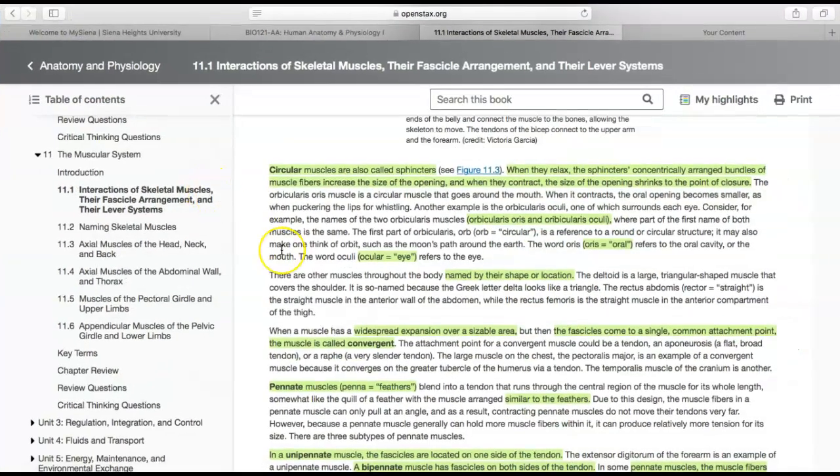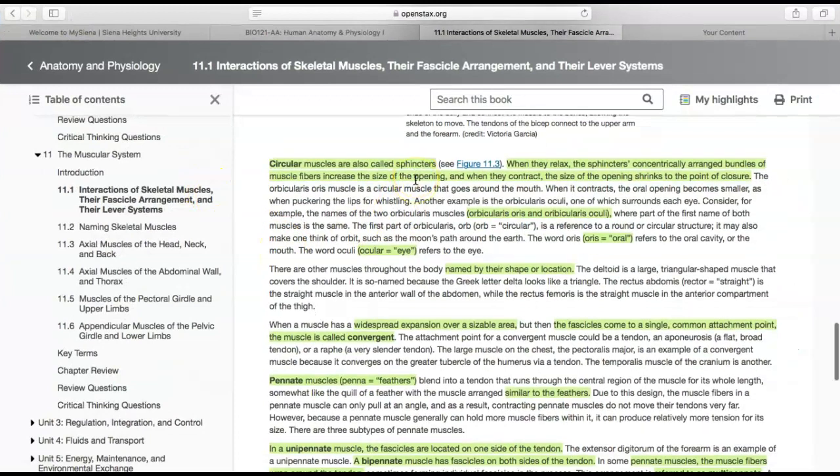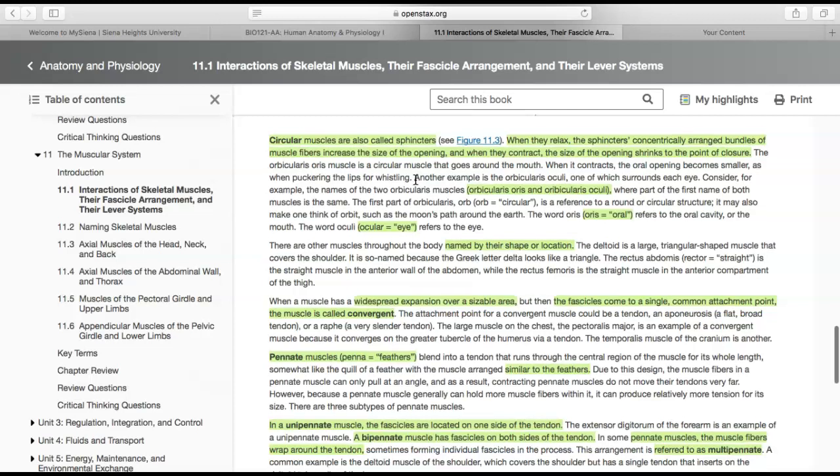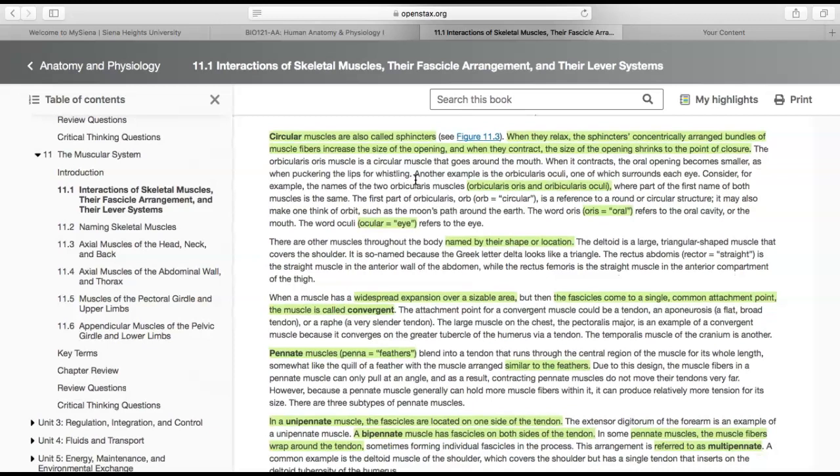The next type of muscles are circular muscles, also called sphincters. When sphincters relax, they increase the size of their opening. When they contract, the size of the opening shrinks to the point of closure. One example is the orbicularis oris muscle—a circular muscle that goes around your mouth. When it contracts, it becomes smaller, like when you pucker your lips for whistling.